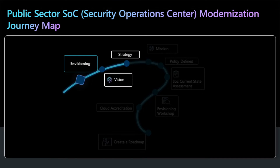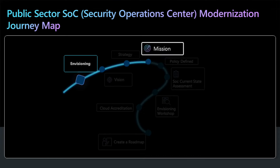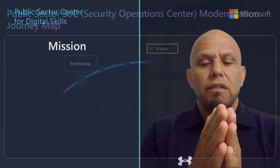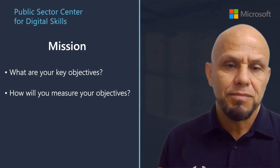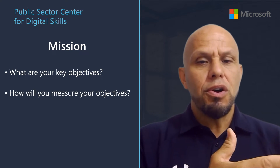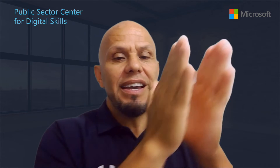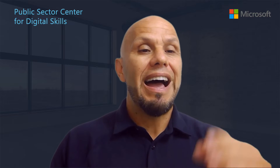Once you have your vision and strategy mapped out, you then have to create a mission. Your mission focuses on the key objectives and how to measure those objectives — it should go much deeper and in more detail than your vision. For example, you can say: I'm going to use hyperscale cloud automation to improve the time to detect and remediate incidents from eight hours to two hours. That is an example of a clear mission and objective.